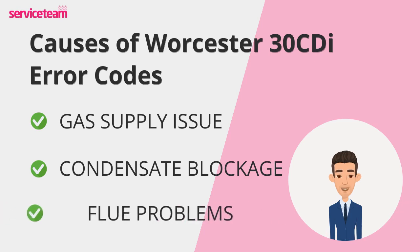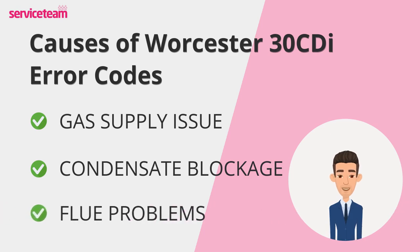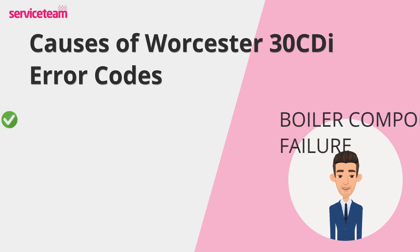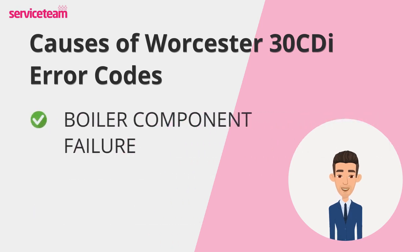Flue problems are another factor to watch out for. A blocked or damaged flue can restrict airflow, potentially triggering errors like EA or C6. Meanwhile, component failures — such as a malfunctioning fan, gas valve, or safety temperature limiter — can lead to significant issues.